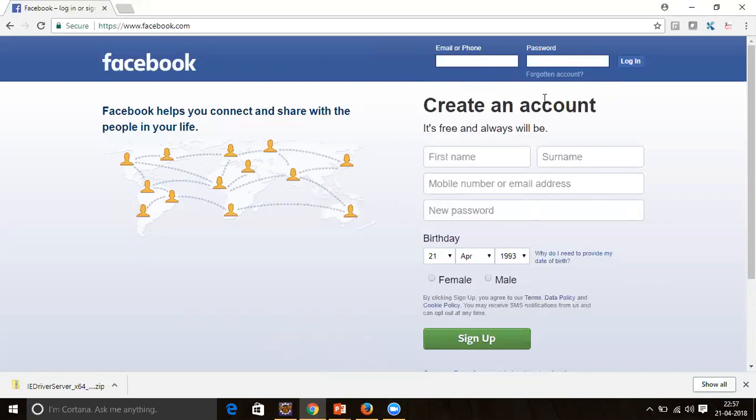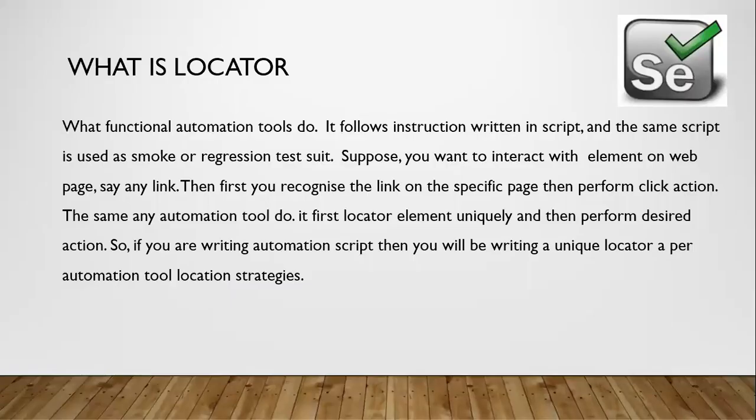Similarly, our automation script performs these steps. Every automation tool works in two pieces: first it recognizes the element on the page, and then it performs the required action. Each automation tool has its own mechanism — QTP has its own mechanism, and Selenium has its own mechanism. This strategy to recognize the element on the webpage is known as the locator in automation testing.